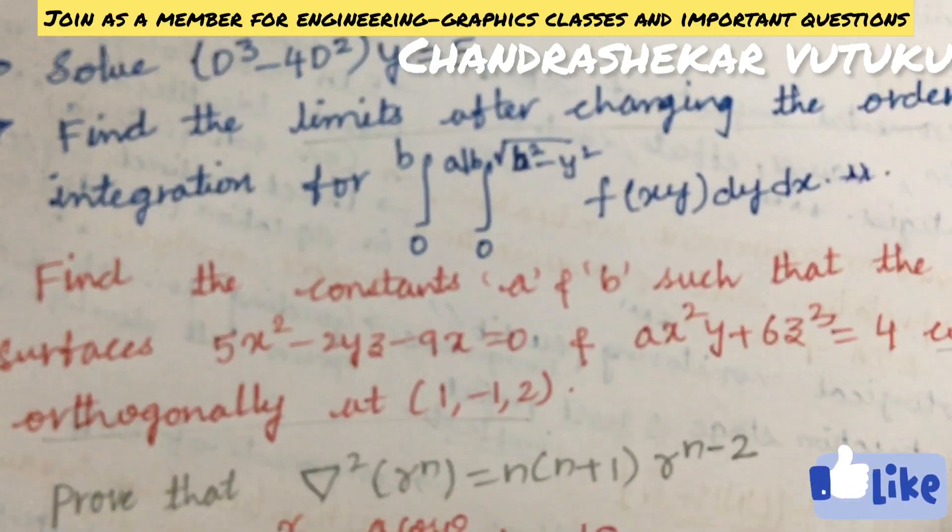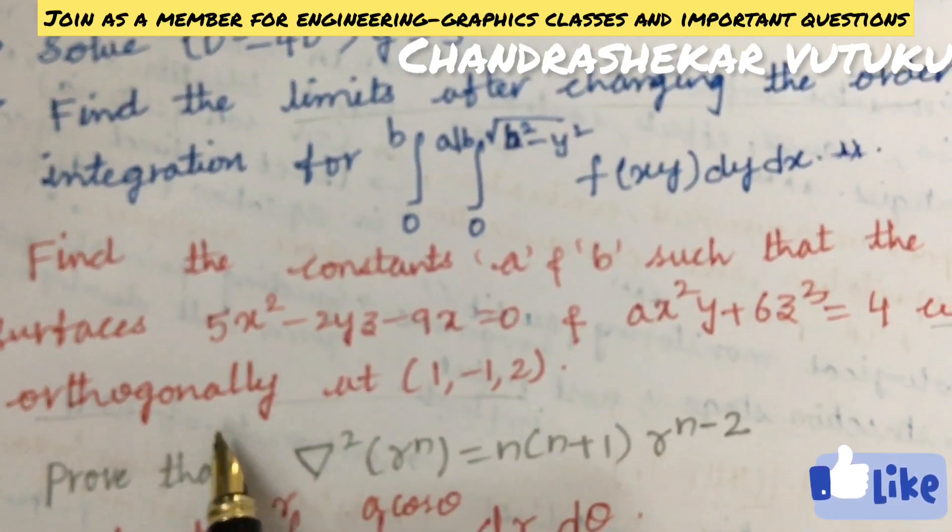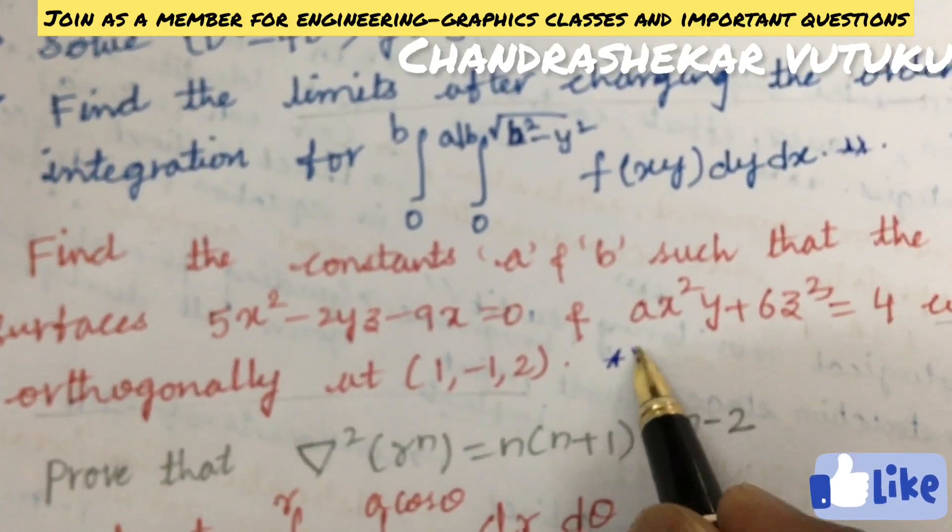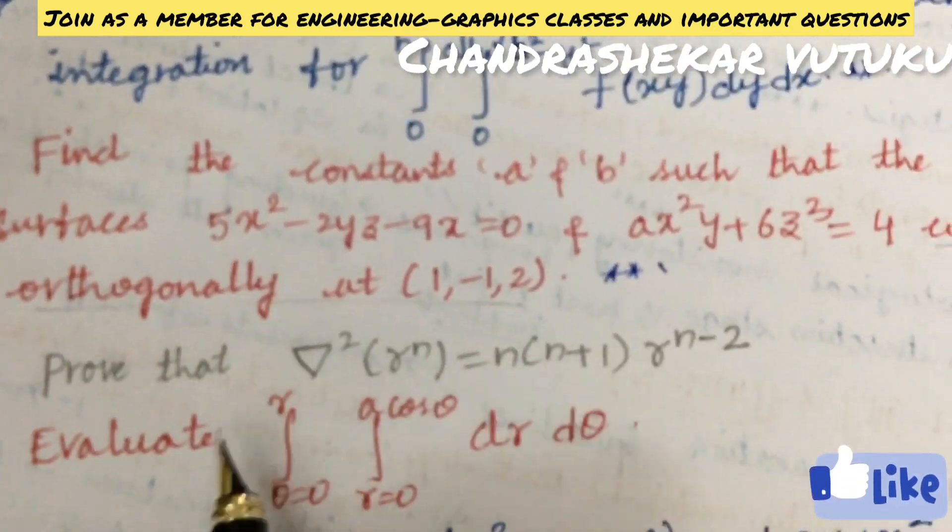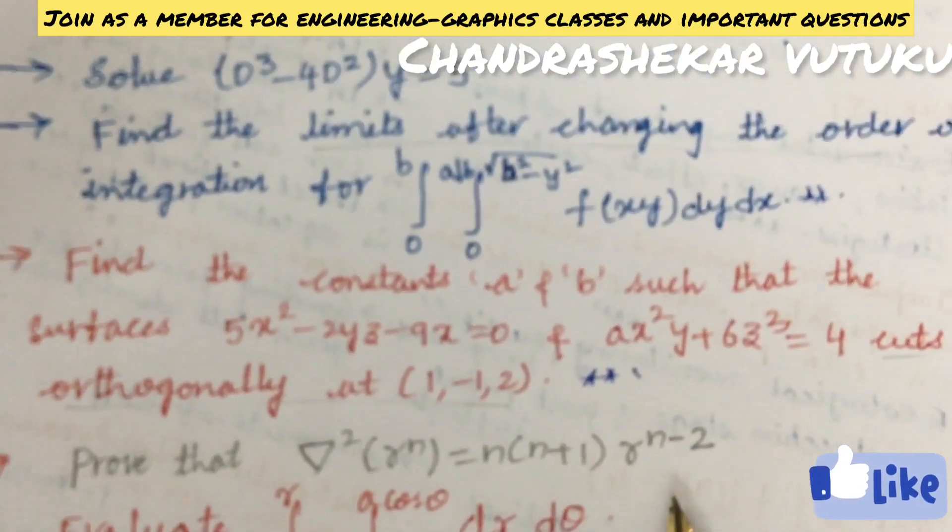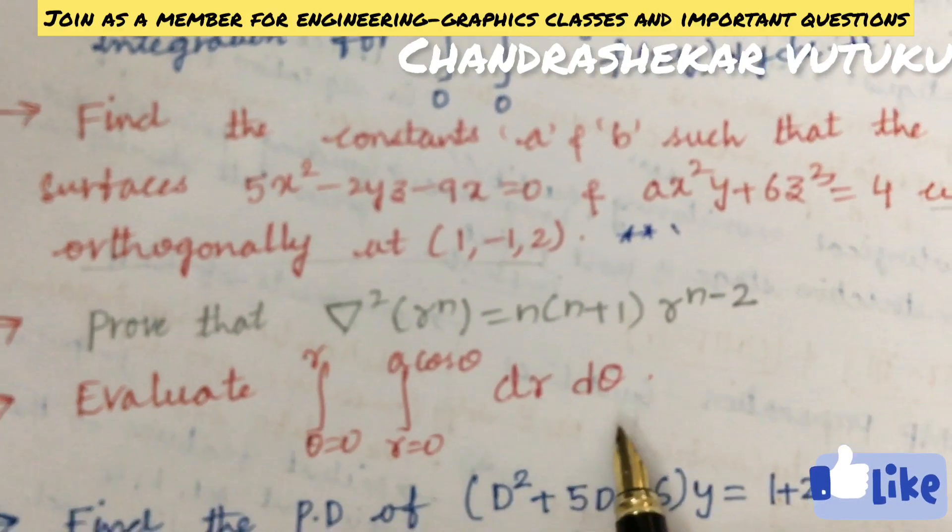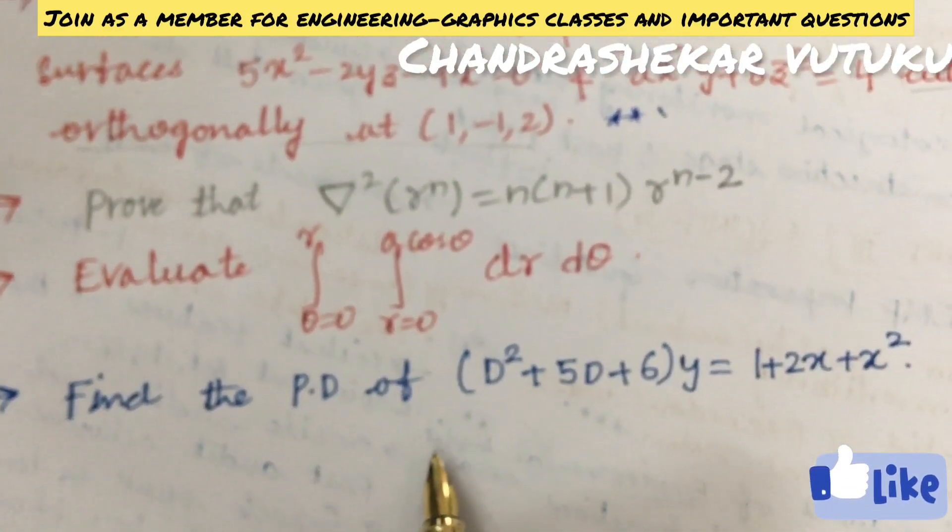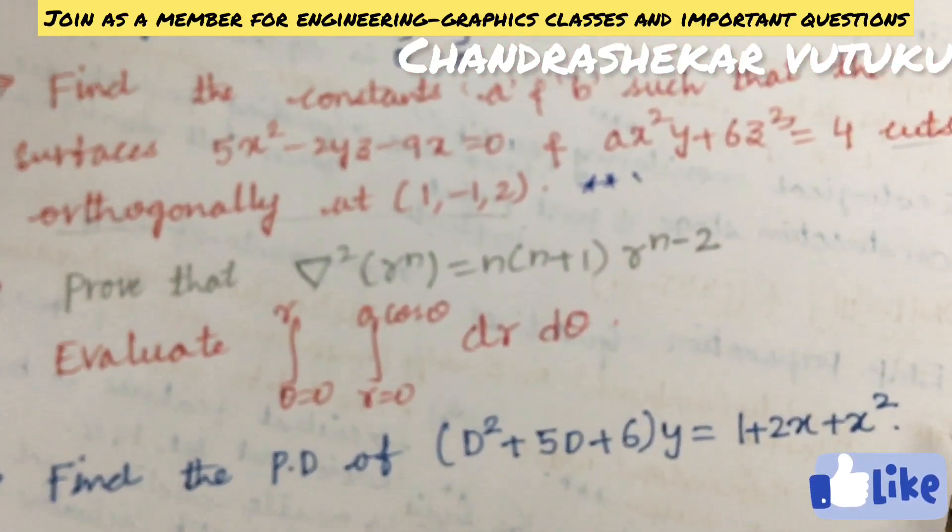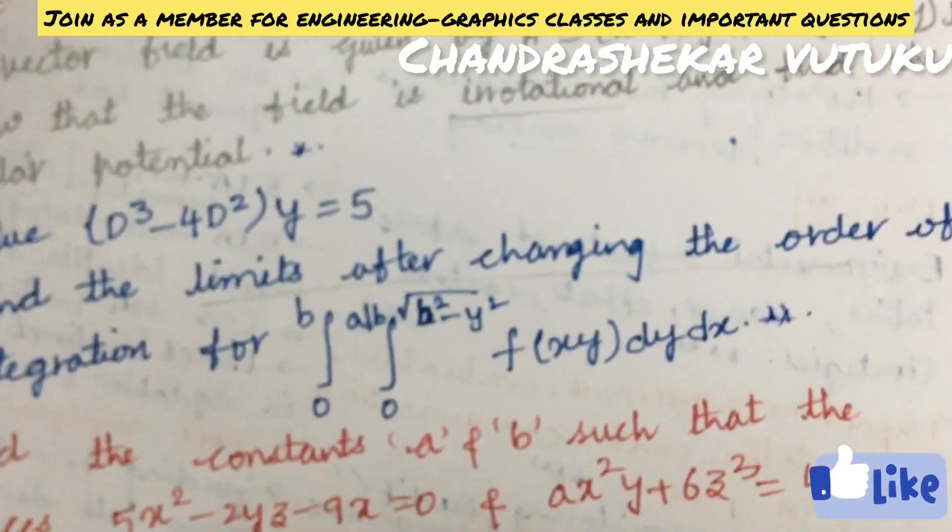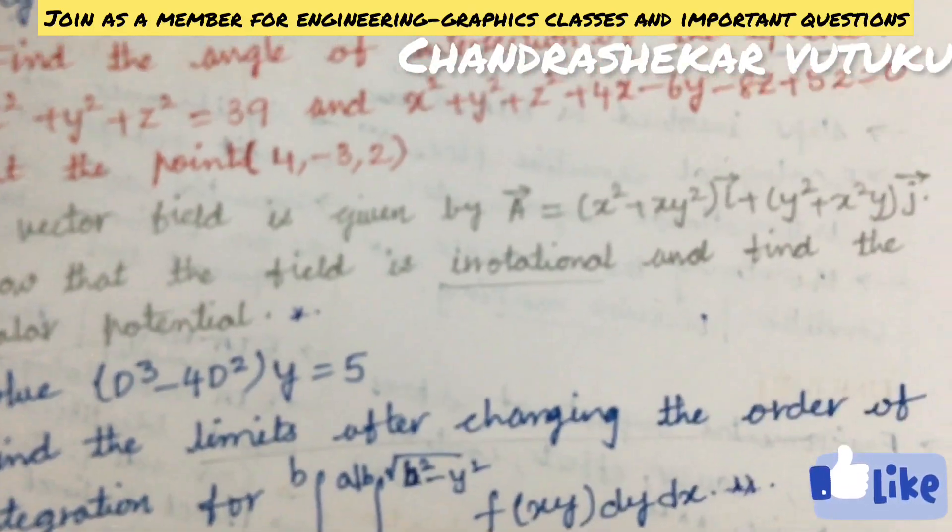Find the constants a and b such that the surfaces cut orthogonally at (1, -1, 2). Prove vector differentiation relations. Evaluate the double integration of dr·dt and find the partial differentiation of the given relation. These are very important questions where you should focus in M2 to score good marks.